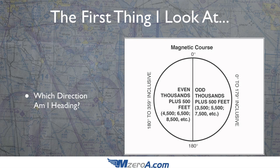The very first thing I look at is which direction am I heading. Keep in mind, this is all based on magnetic course. If I'm flying out to the west, or from a 180 to a 359 heading, I'm going to fly my even altitudes plus 500. Whereas if I'm heading out to the east, I can fly my odd plus 500. And that goes from 179 up to zero.